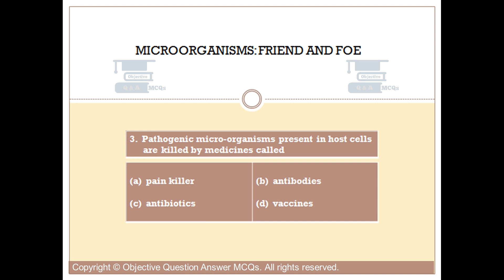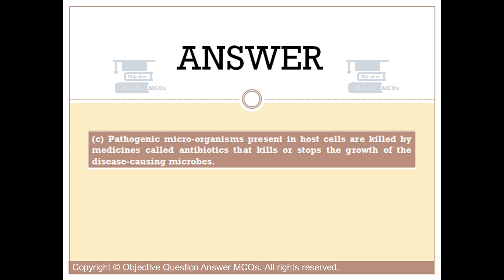Question number three. Pathogenic microorganisms present in host cells are killed by medicines called: Option A: Painkiller. Option B: Antibodies. Option C: Antibiotics. Option D: Vaccines. The right answer is option C. Pathogenic microorganisms present in host cells are killed by medicines called antibiotics, which kill or stop the growth of disease-causing microbes.